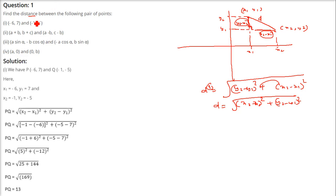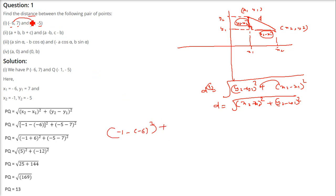Let us take the first one. This is x1, y1, x2, y2. So x2 minus x1, that is (minus 1 minus of minus 6) whole square plus (minus 5 minus 7), that is y2 minus y1, so (minus 5 minus 7) whole square, and then under root.